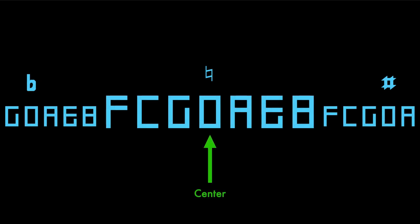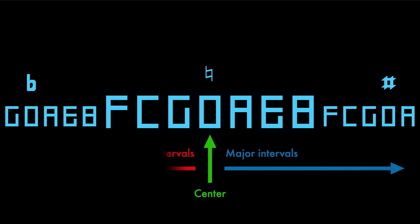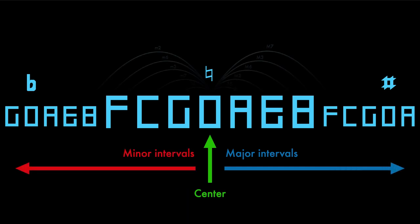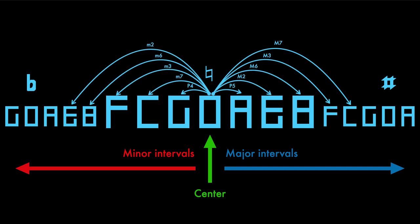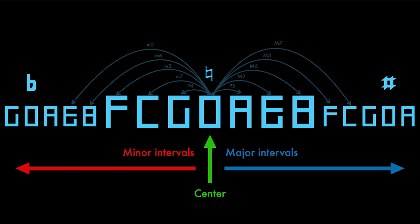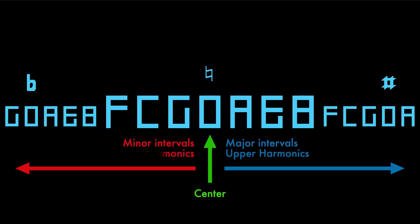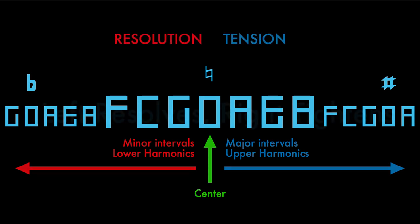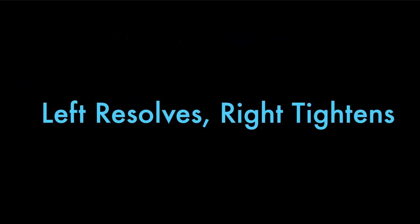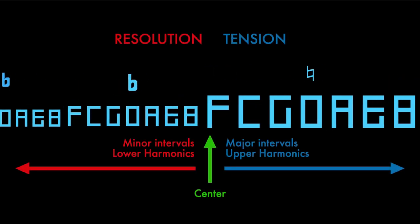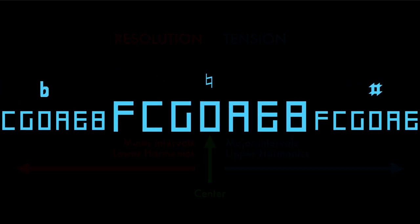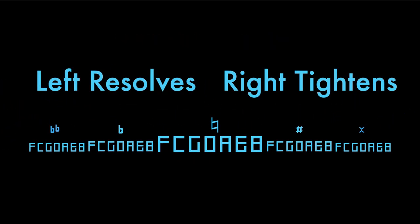The series of fifths is not only symmetrical in terms of the distance between the notes, but also holds another useful feature to help with learning harmony. Take any note as a center note — in our case it is D. All notes to the right of D are the major intervals; all notes to the left of D are the minor intervals. In other words, all notes on the right side are upper harmonics and those on the left are lower harmonics. To make it simple, just remember: moving towards the left gives resolution, while moving to the right gives tension — left resolves, right tightens. This simple quote is valid for all notes you pick as a center.